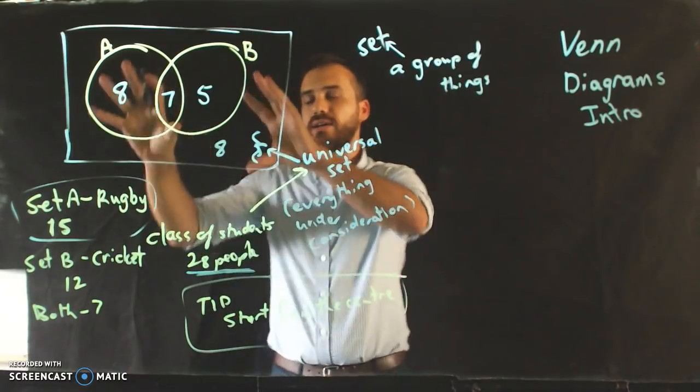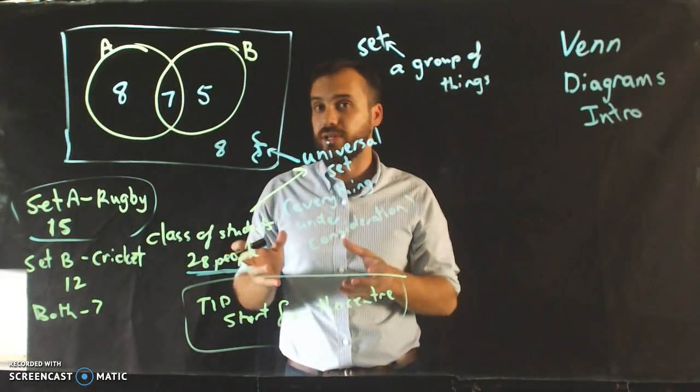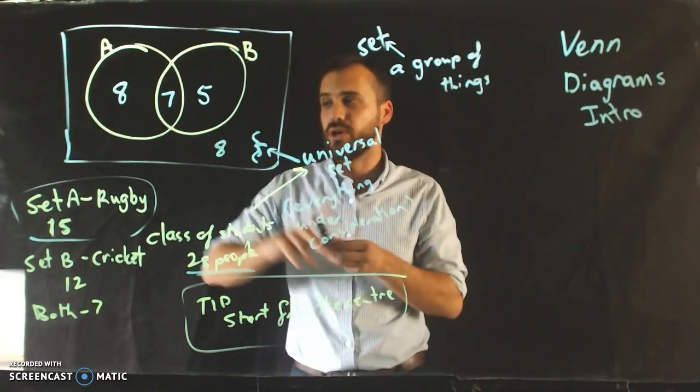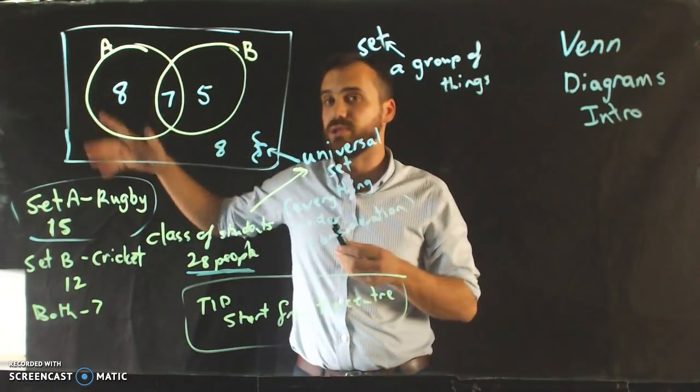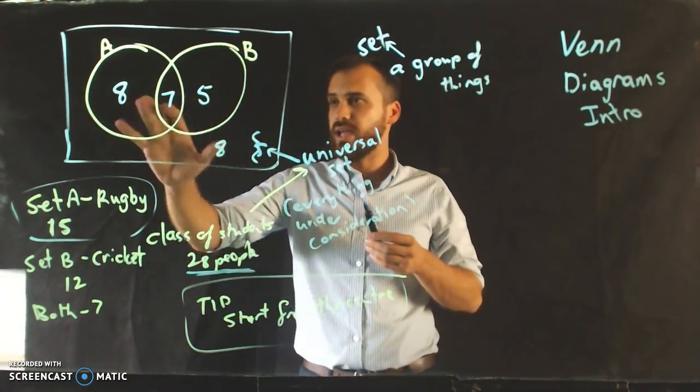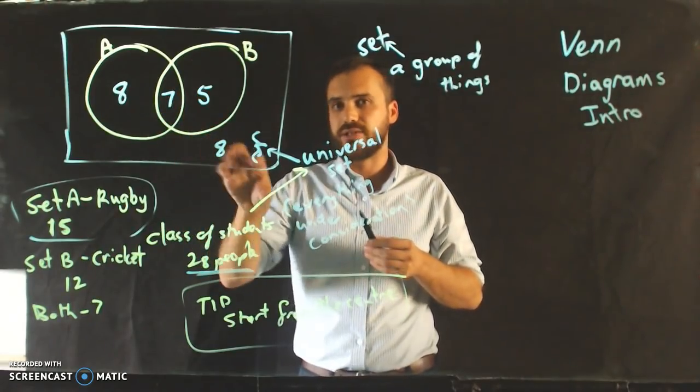8 people are outside of those circles. Those are the people that don't play any sport. No rugby, no cricket. Maybe they play another sport, swimming. So 8, 7, 5, and then 8 outside here.